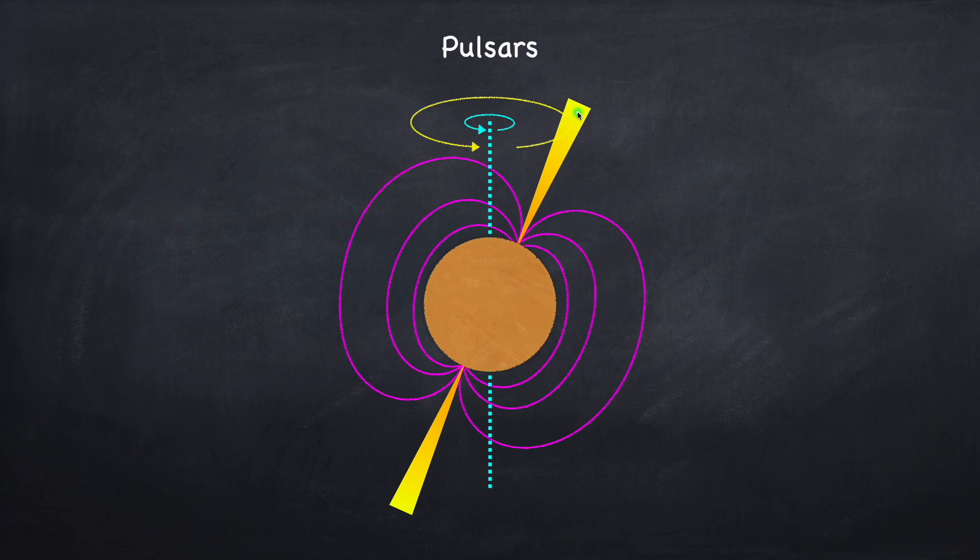Just as an interesting anecdote, the first pulsar ever discovered was called LGM, which stood for Little Green Men. Because they didn't know what it was, and it was half-jokingly suggested that this pulse of light was actually aliens trying to communicate with us. Now very soon after its discovery, more pulsars were discovered, so that immediately ruled out the possibility that this was an alien civilization trying to communicate with us.